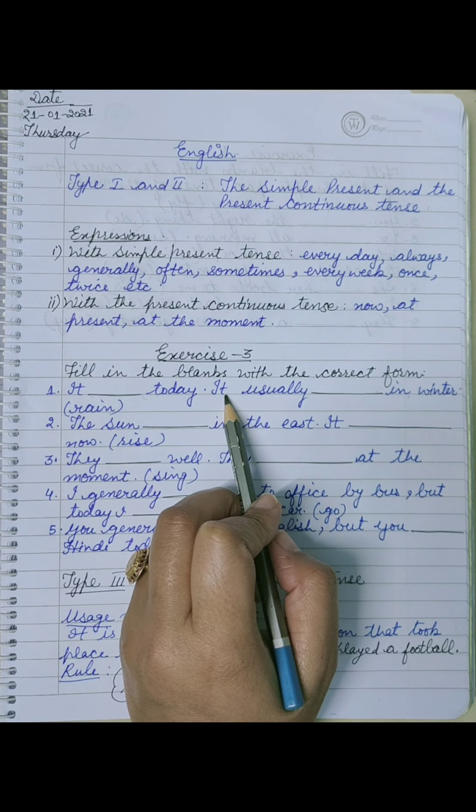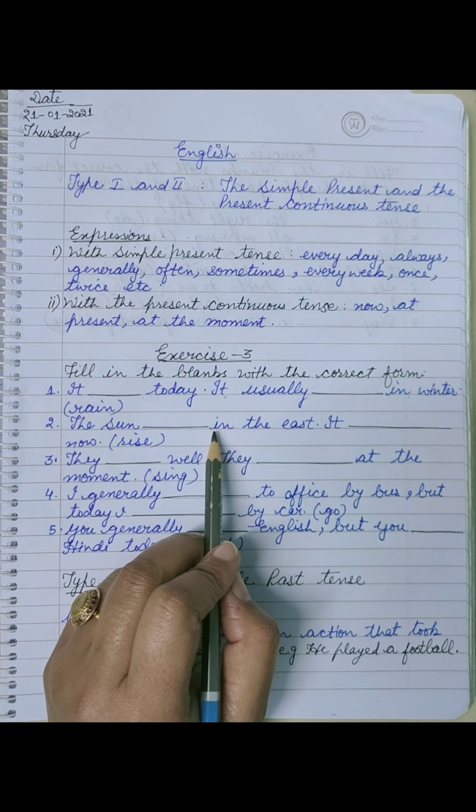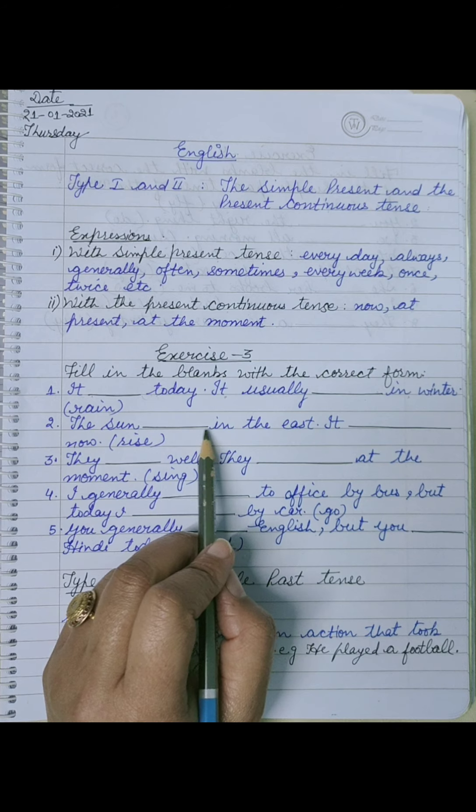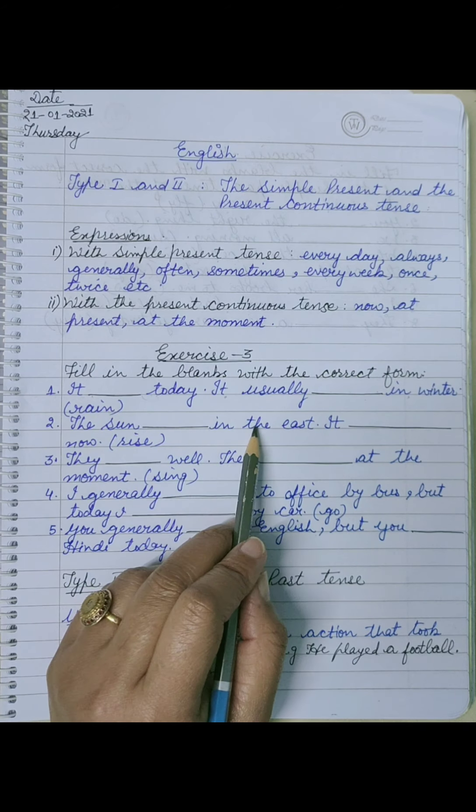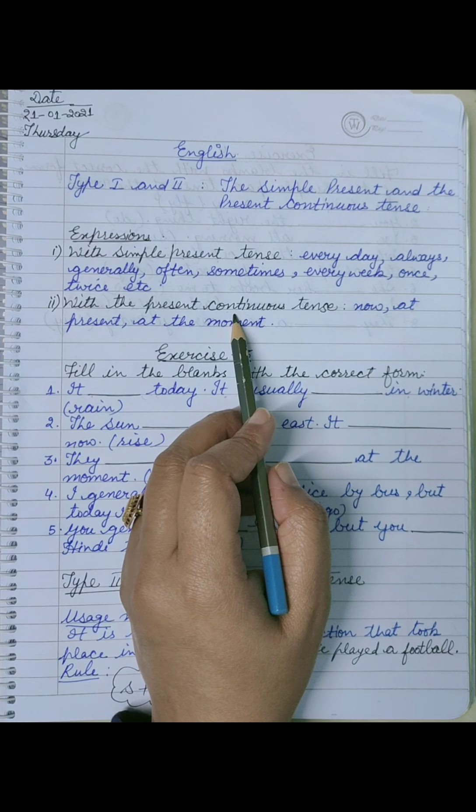हमें simple present और present continuous के rules भी clear होने चाहिए. Next, the sun dash in the east, तो ये क्या है, general truth है - the sun rises in the east.